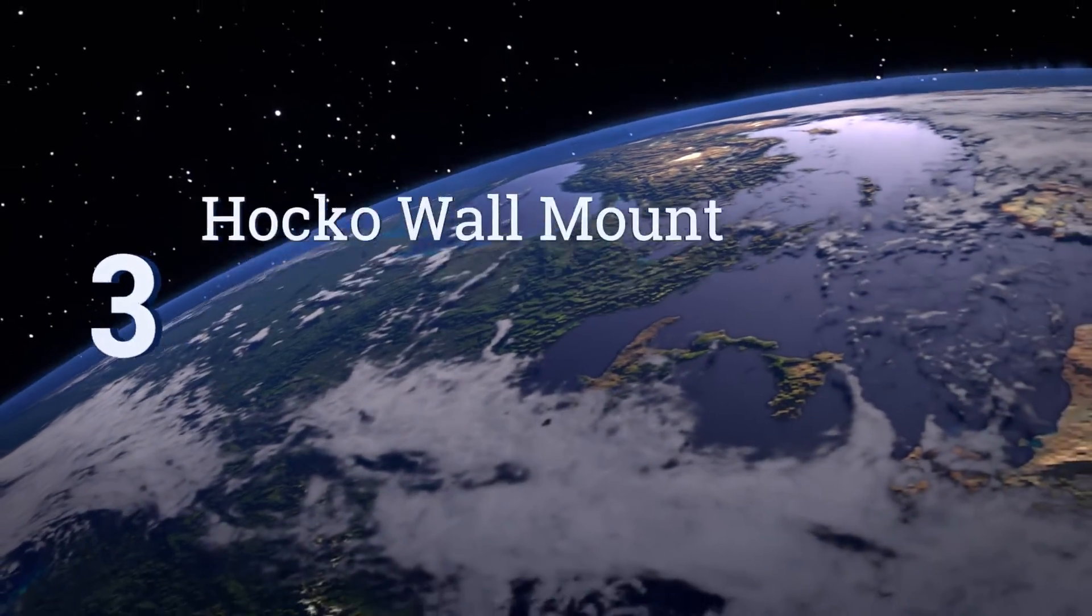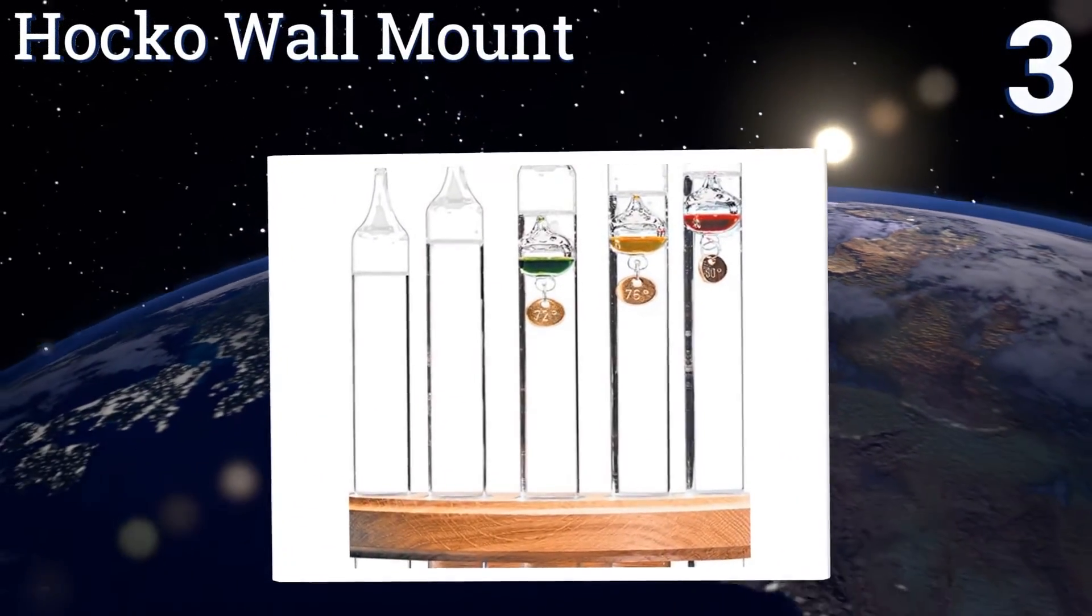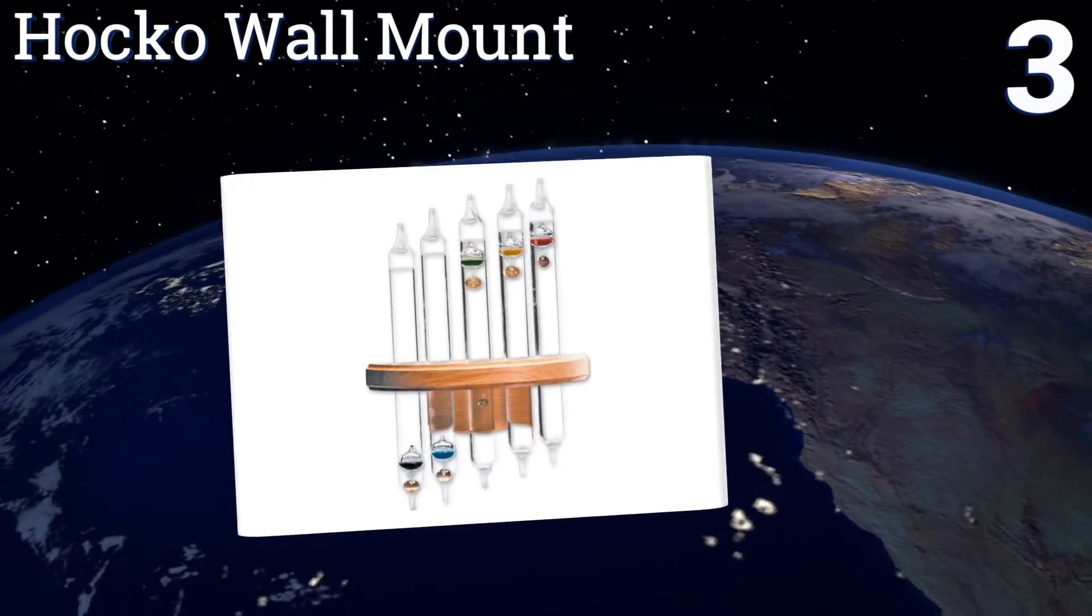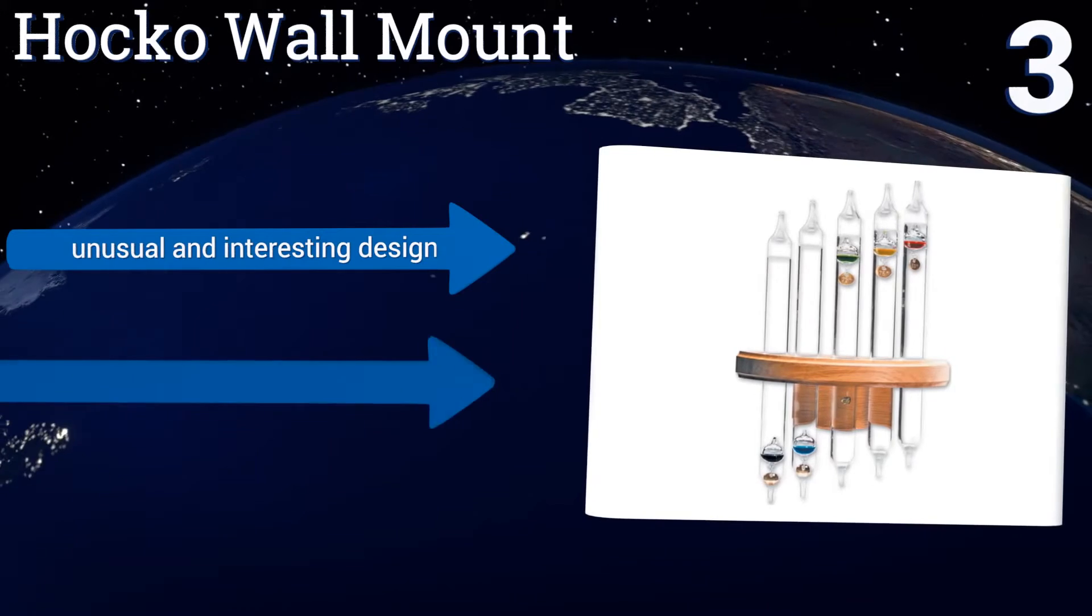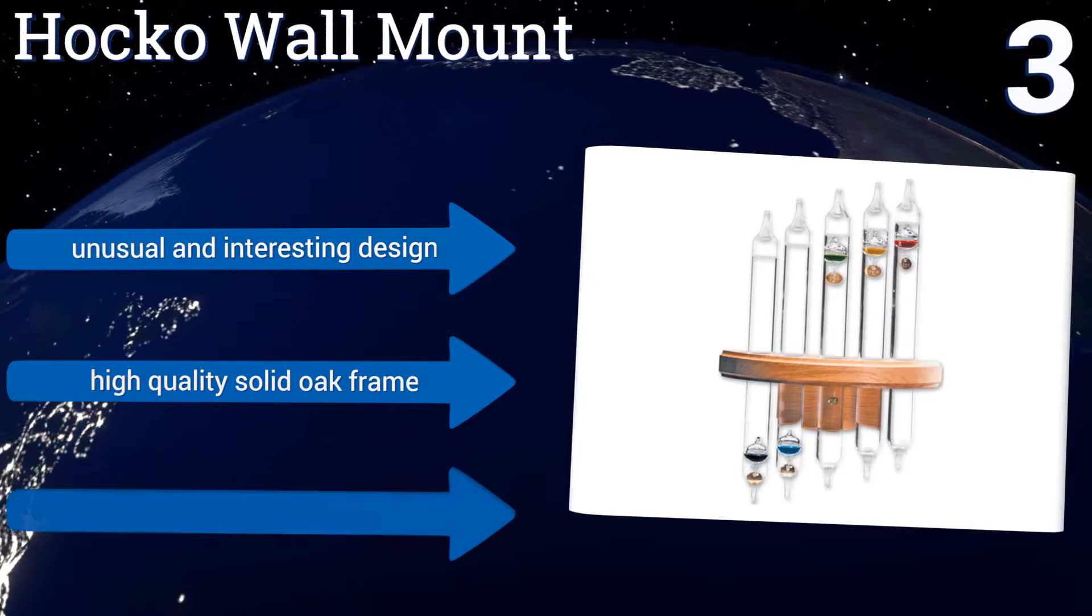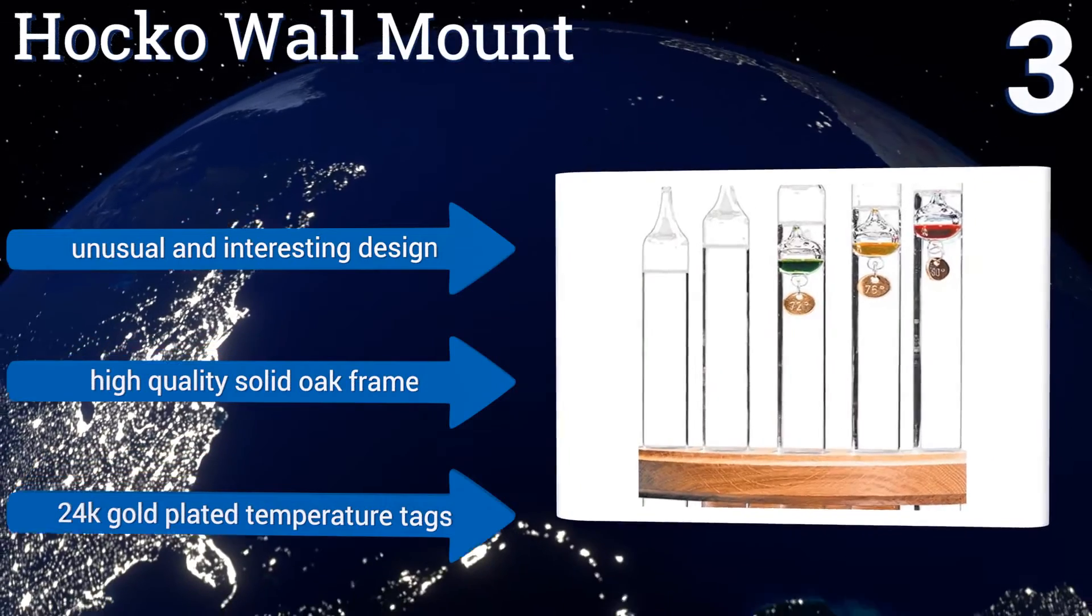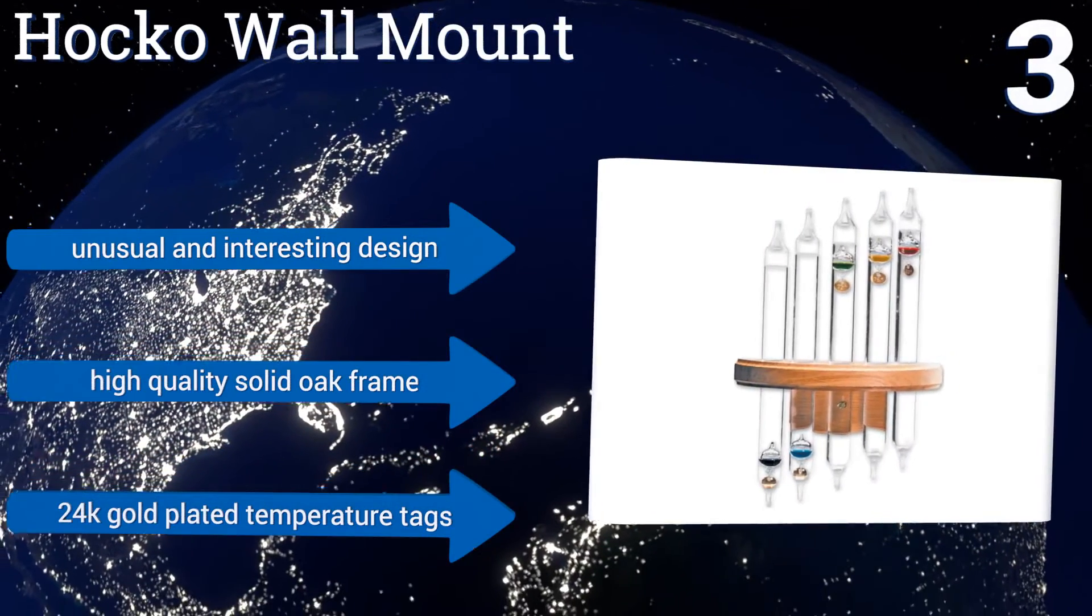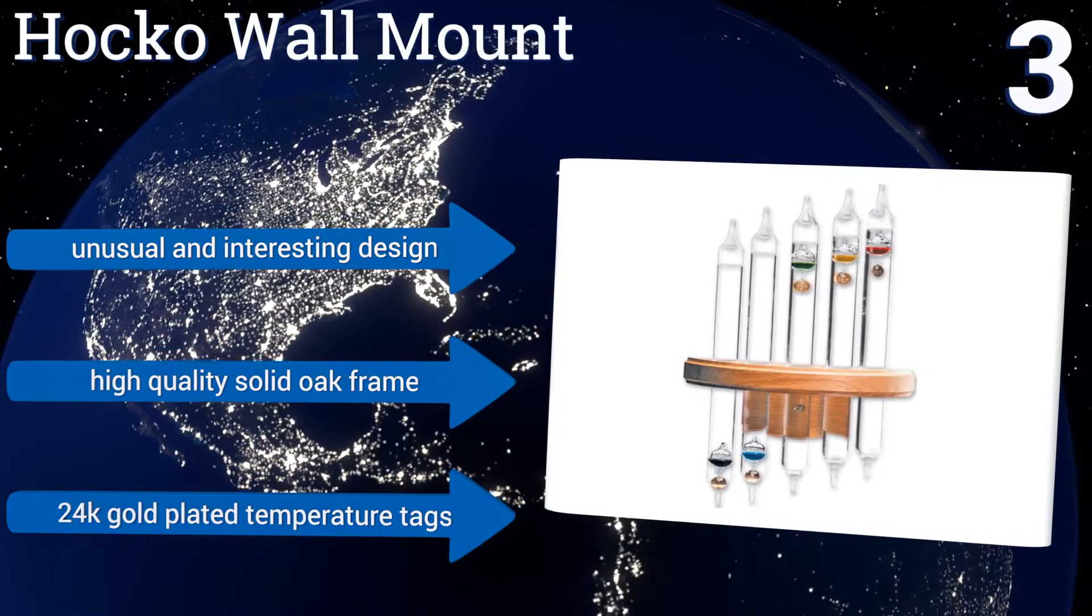Nearing the top of our list at number 3, unlike most Galileo Thermometers that shove all of the colored liquid-filled globes into one tube, which some feel creates a cluttered look, the HOKO wall mount has five separate tubes, with one colored globe in each. It offers a temperature range from 64 to 80 degrees Fahrenheit. It features an unusual and interesting design, a high-quality solid oak frame, and 24-carat gold-plated temperature tags.